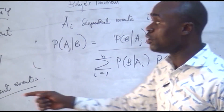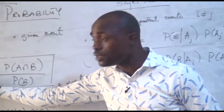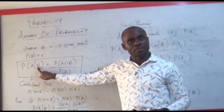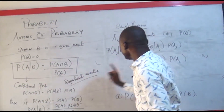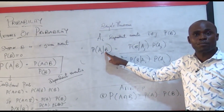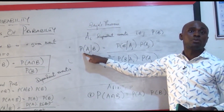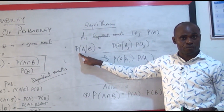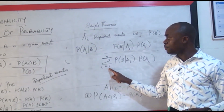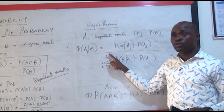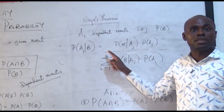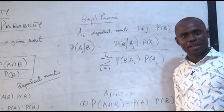In the Bayes' theorem, you have one given probability, then you can have two or more events. So I can represent from 1 to 2; if you have 3 events, it will be from 1 to 3, and so on and so forth.